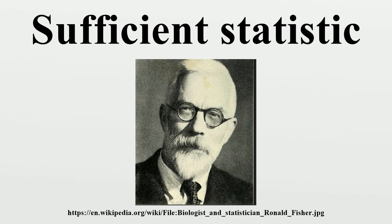Minimal sufficiency. A sufficient statistic is minimal sufficient if it can be represented as a function of any other sufficient statistic. In other words, s is minimal sufficient if and only if s is sufficient, and if t is sufficient, then there exists a function f such that s = f(t). Intuitively, a minimal sufficient statistic most efficiently captures all possible information about the parameter θ. A useful characterization of minimal sufficiency is that when the density f_θ exists, s is minimal sufficient if and only if the ratio f_θ(x)/f_θ(y) is independent of θ when s(x) = s(y). This follows as a direct consequence from Fischer's factorization theorem.